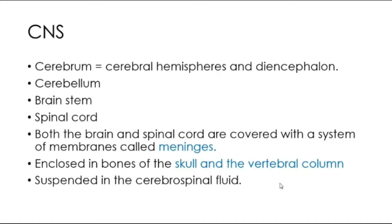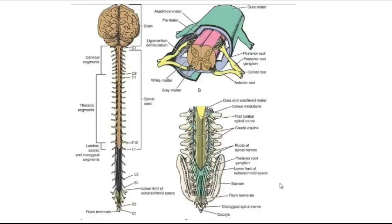The brain and spinal cord are suspended in a fluid called cerebrospinal fluid, which you are already somewhat familiar with. This diagram is taken from your neuroanatomy book, so the material and pictures will be drawn from your textbook to help with reading.